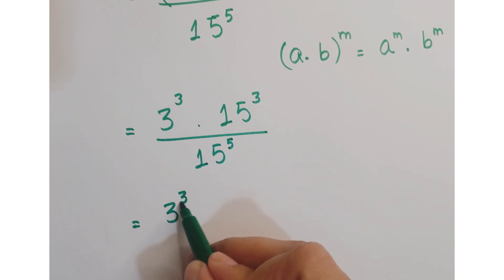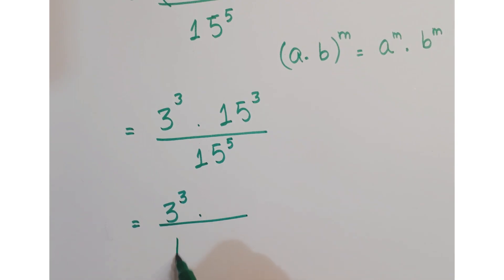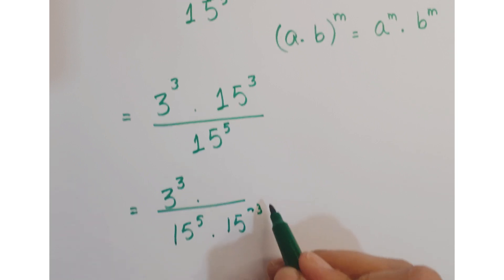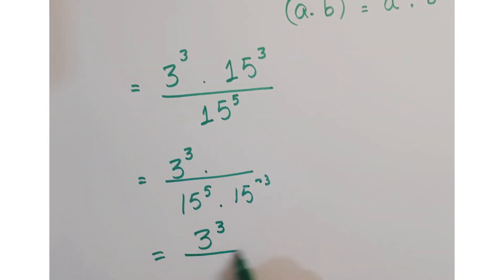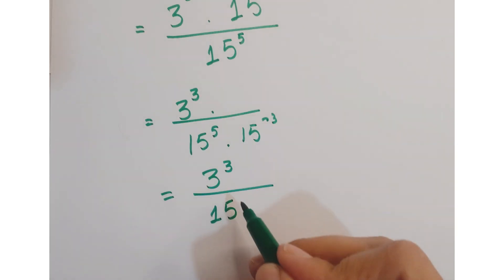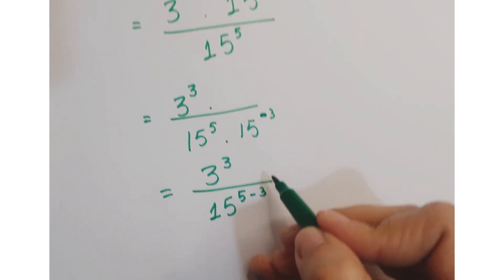Further, you can just bring the power of 15 in the denominator. So here you get 3 to the power 3 upon 15 to the power 5 minus 3.